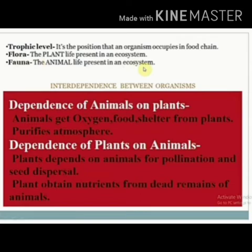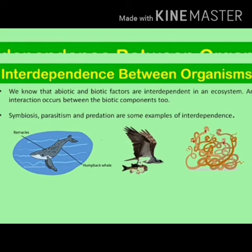Animals get oxygen, food, and shelter from plants, and plants also purify the atmosphere so animals can survive. Similarly, plants depend on animals for pollination and seed dispersal, and plants obtain nutrients from the dead remains of animals. Abiotic and biotic factors are interdependent in an ecosystem, and interaction also occurs between the biotic components themselves — like symbiosis, parasitism and predation, which are some examples of interdependence.